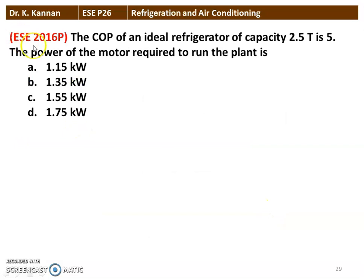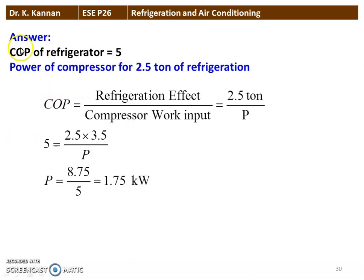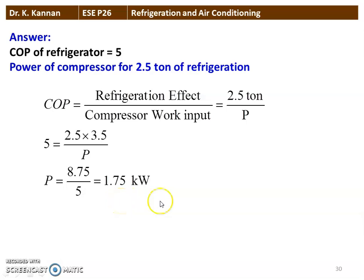The next problem is from the 2016 question paper. The COP of an ideal refrigerator of capacity 2.5 tons is 5. The power of the motor required to run the plant is: COP = refrigeration effect / power, so 5 = (2.5 × 3.5) / P = 8.75 / P. Therefore P = 8.75 / 5 = 1.75 kilowatt.